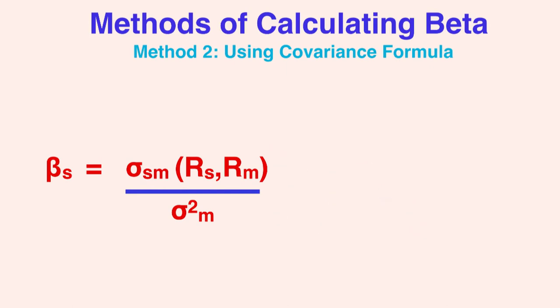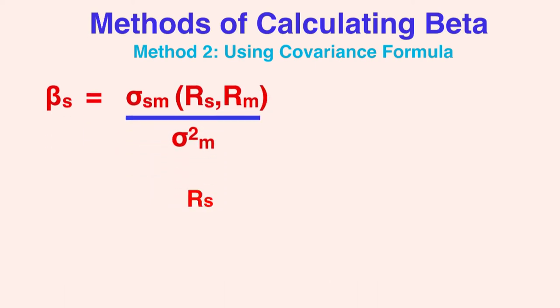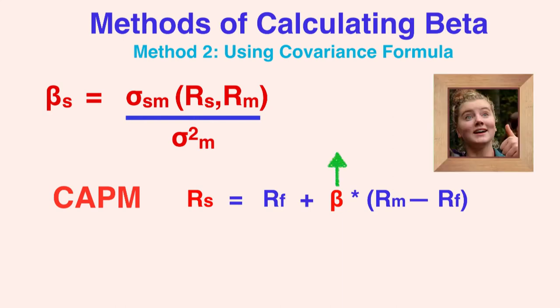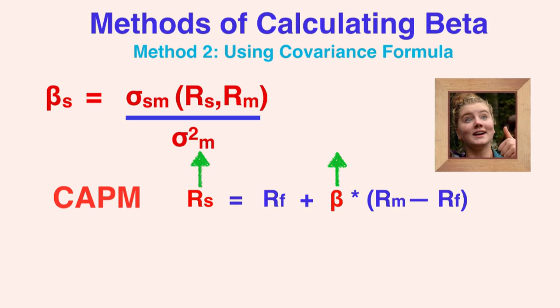In both approaches, beta is capturing the systematic risk of a stock by conveying how much the asset's return fluctuates, given a change in the overall market return. Intuitively, you can expect that if a stock's return fluctuates a lot for just a minor change in the overall market return, then this stock would be considered risky, because it will either earn extraordinary or disastrous returns. Tying this back to our discussion of the capital asset price model, that means a highly risky asset should earn higher returns than the market return, to compensate investors for holding onto such a risky asset.